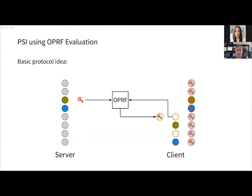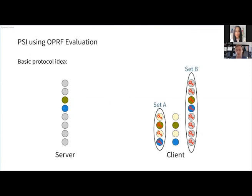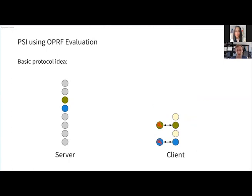Then the server and client engage in the oblivious pseudorandom function protocol, where the server inputs the key and the client inputs each of his items. They work together to evaluate the OPRF for each of the client's items. After this procedure, the client now has two sets of items encrypted with the same secret key. Since this is a deterministic procedure, he can perform a standard intersection on these encrypted items, and because he kept track of which plaintext items mapped to which OPRF evaluations, he can determine which of his items are in the intersection.